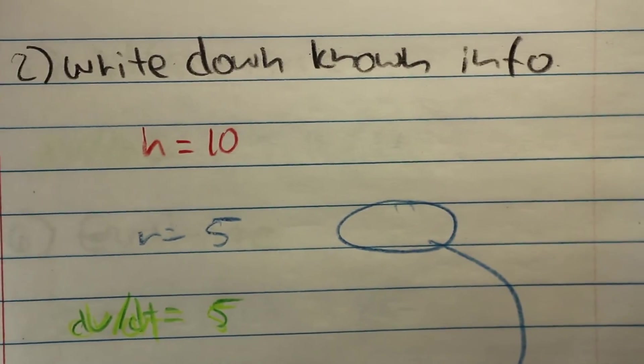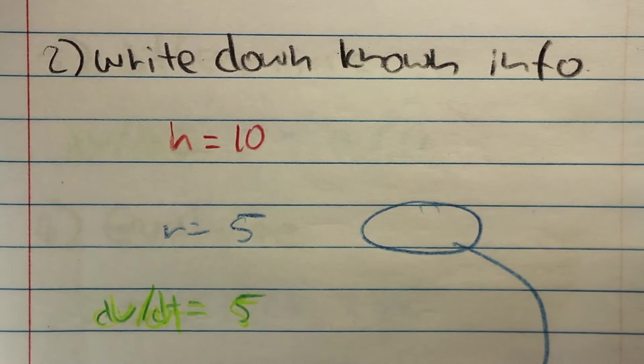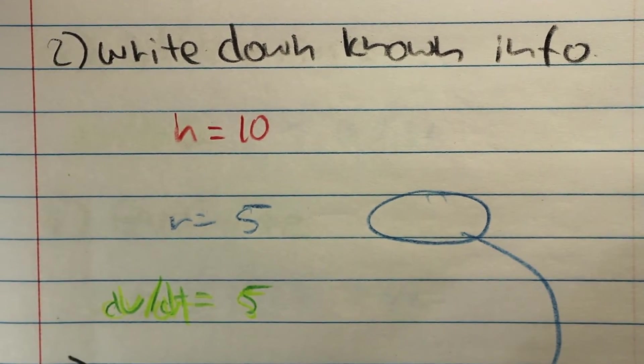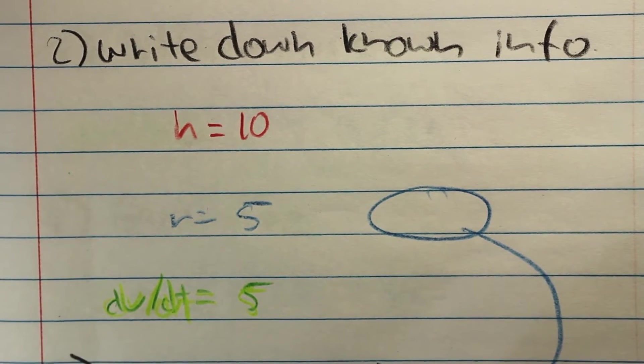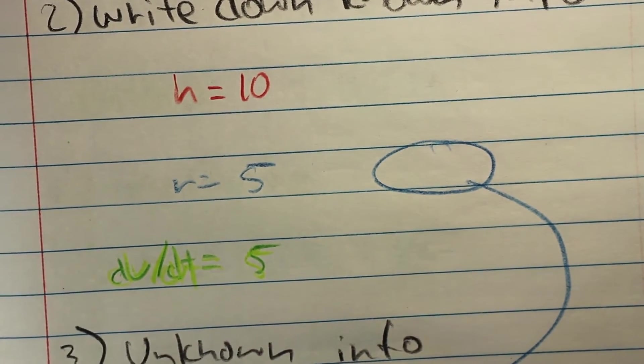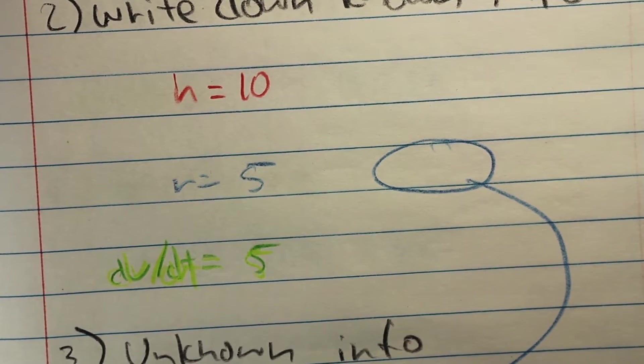Step number 2, writing down the known information. With the information given from the problem, we know that the height is 10, so h equals 10, and the radius is 5, r equals 5, and we also know that the rate at which the mulch is falling is 5, dv/dt equals 5.